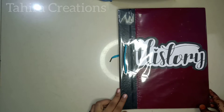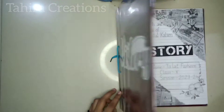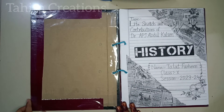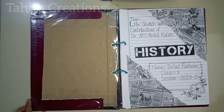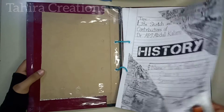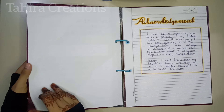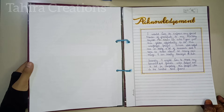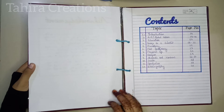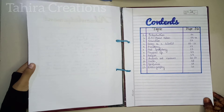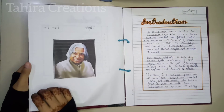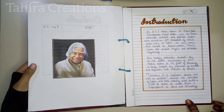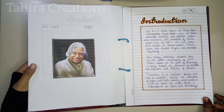This is the history project of class 10th ICSE. The topic is life sketch and contributions of Dr. APJ Abdul Kalam sir. Here is the second page — acknowledgement, next it's content, next it's introduction. A picture is pasted over here; you can also paste pictures, and I think you must paste pictures.